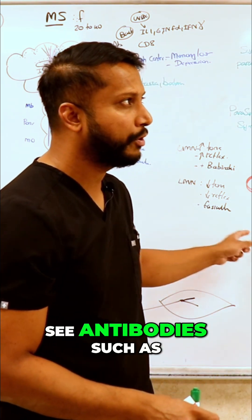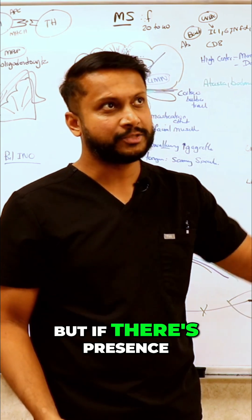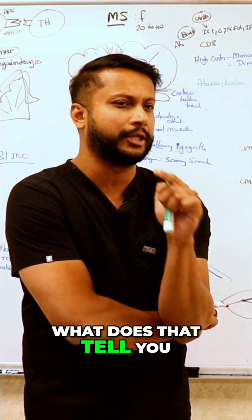Typically, are you supposed to see antibodies such as IgG in your brain? You're not, but if there's presence of IgG in the CSF, what does that tell you?